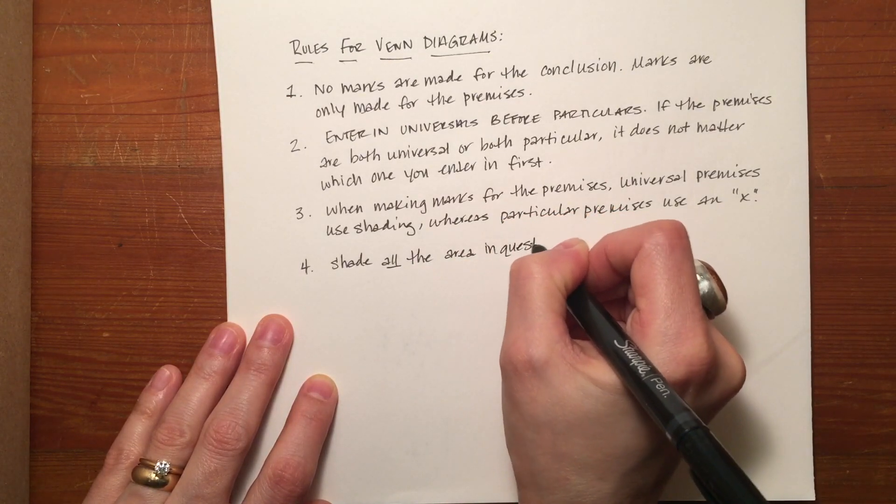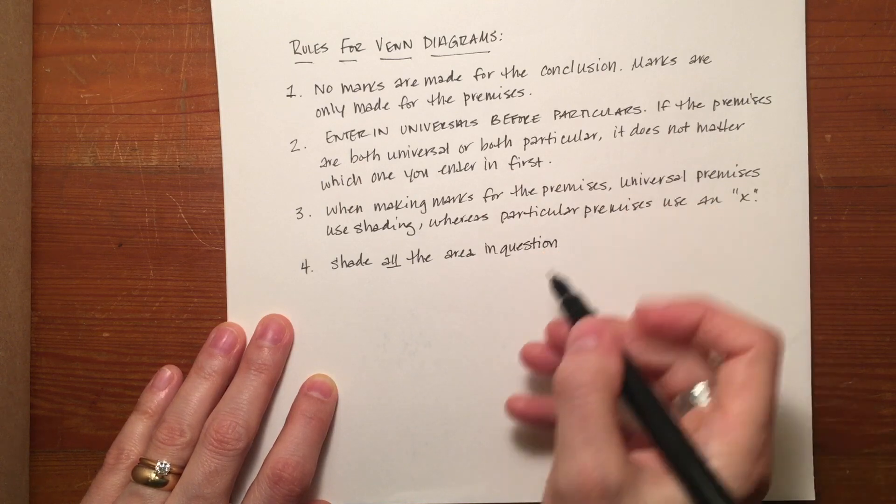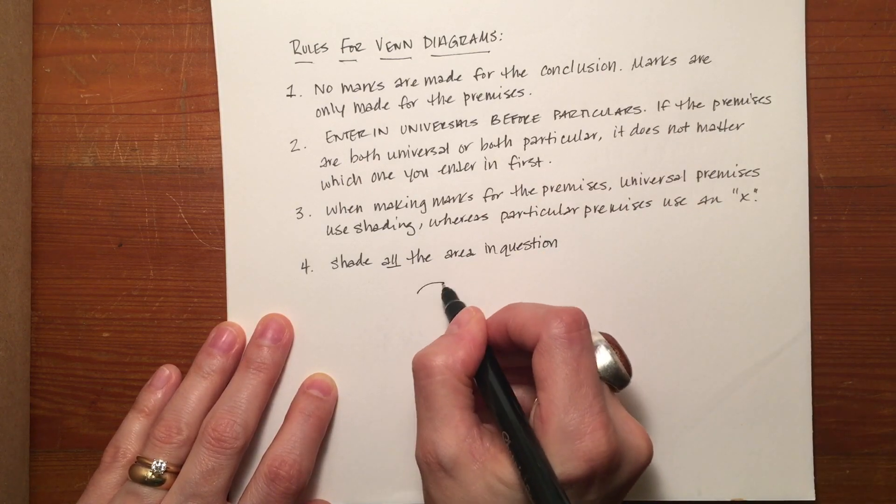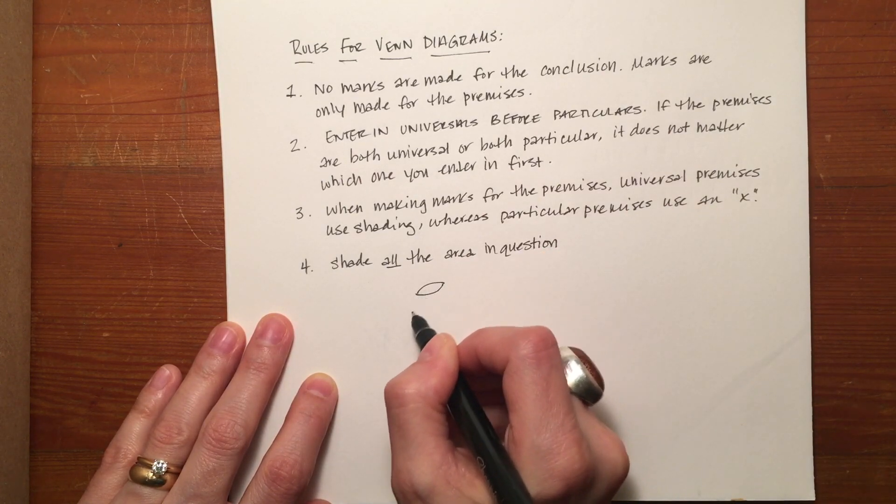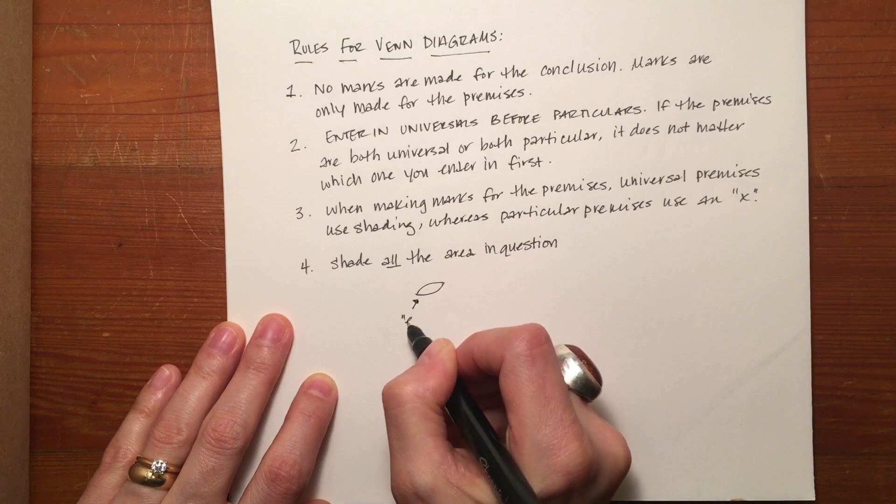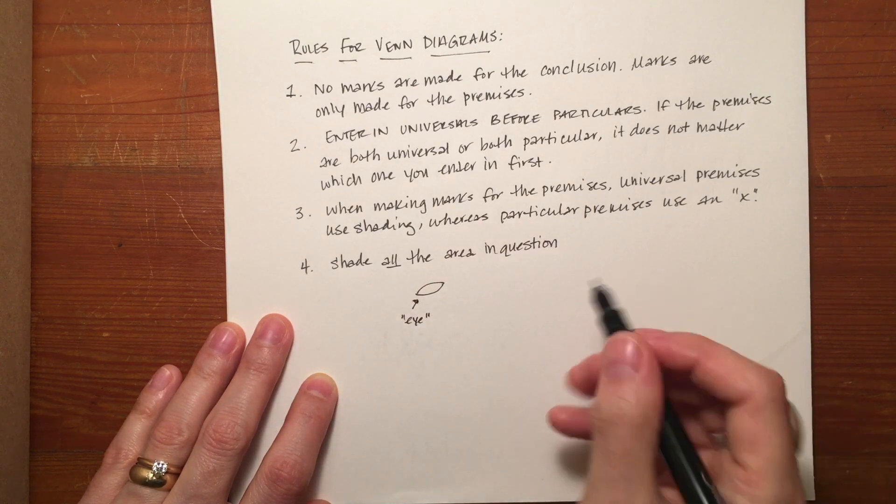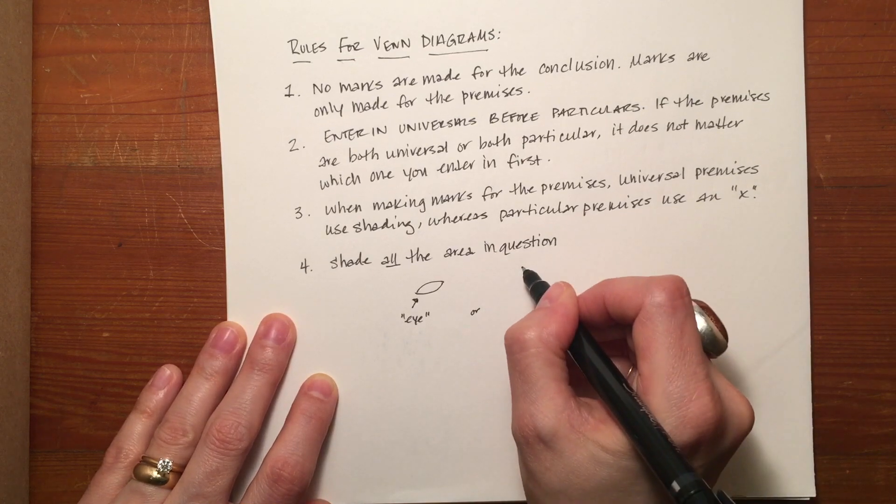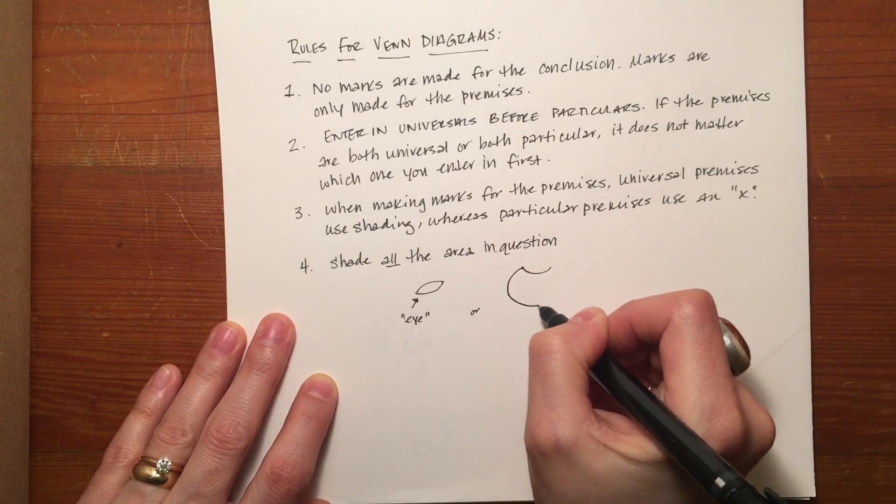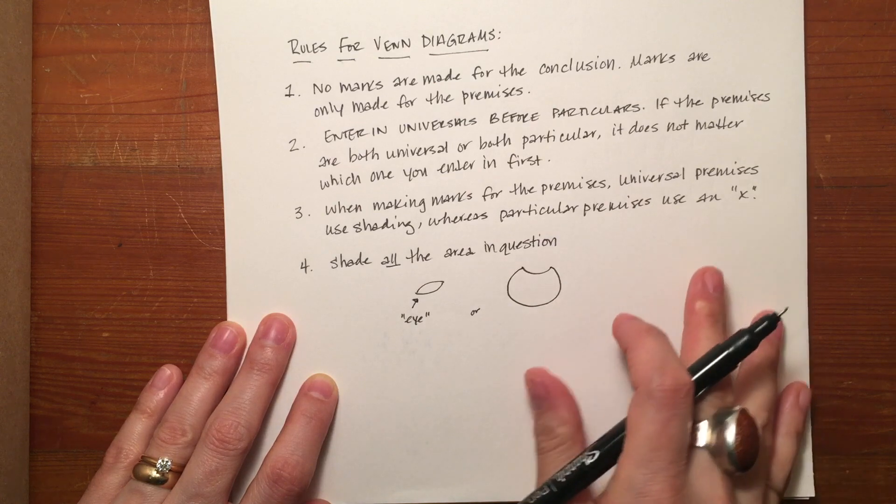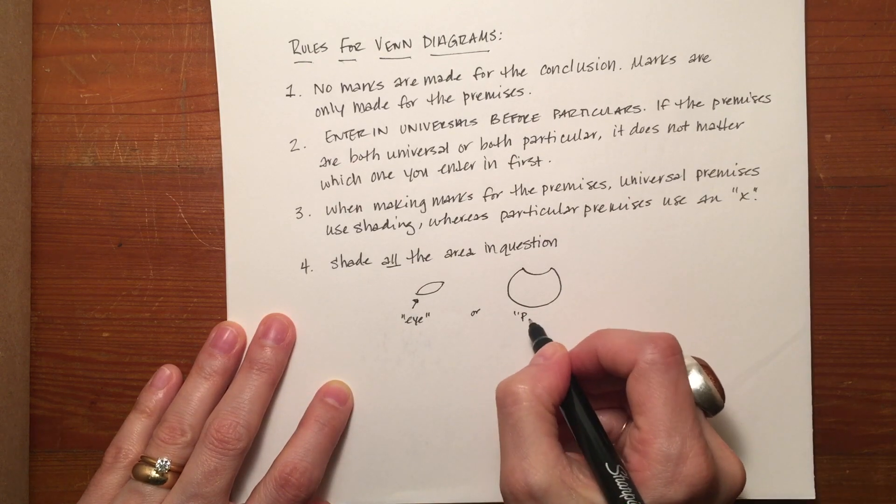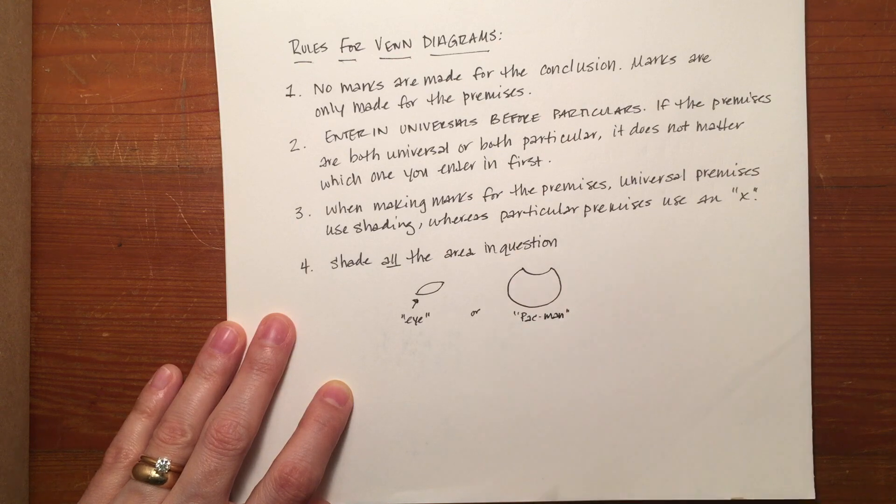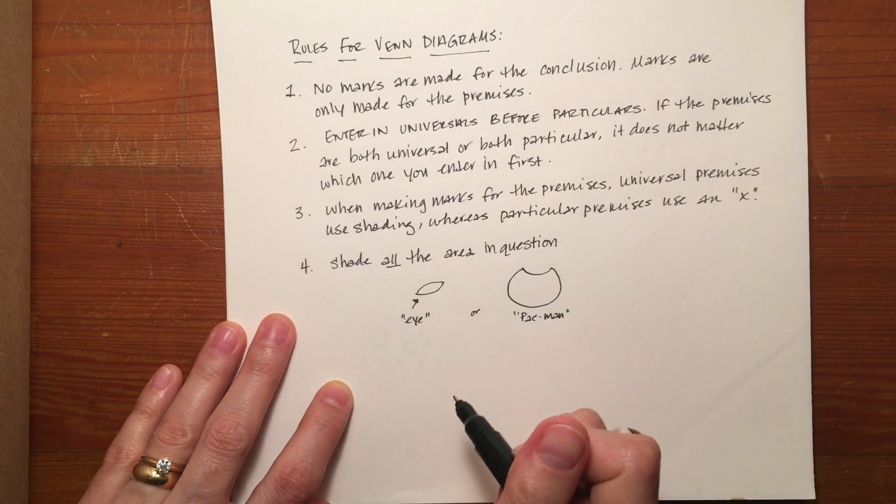You'll always either be dealing with a smaller portion, or what I like to call unofficially an eye, or a larger portion of a circle, which will always look like this. We can call that unofficially a Pac-Man, or the larger portion.